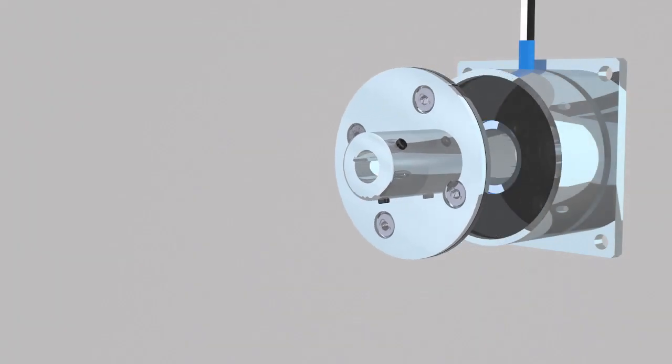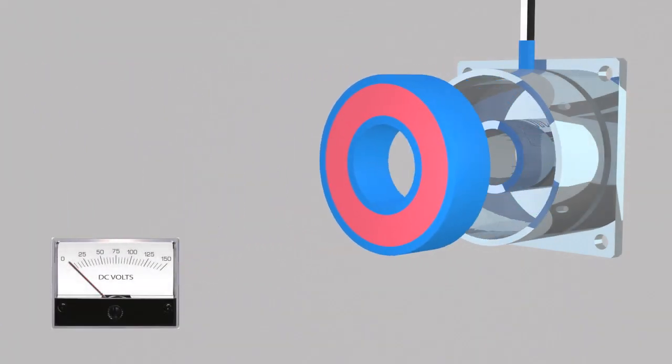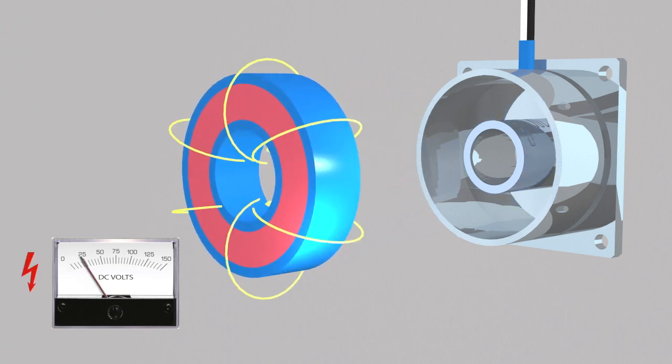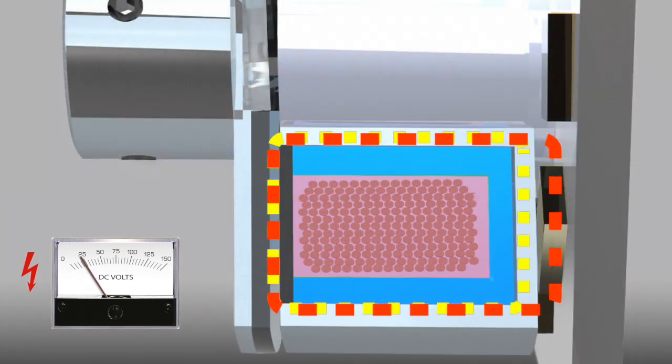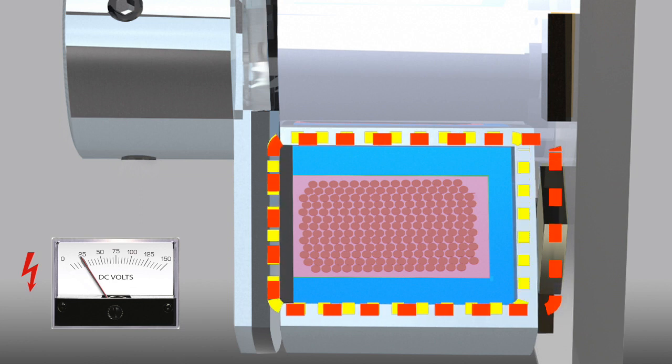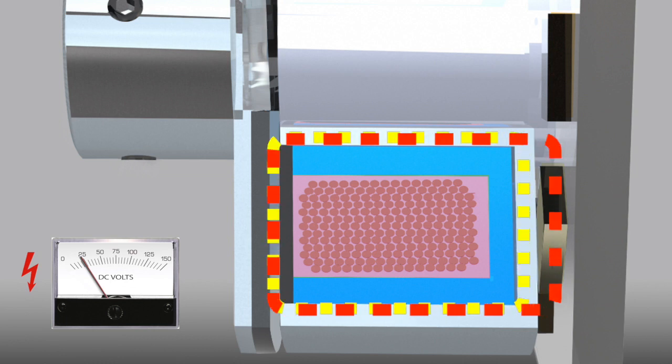When voltage or current is applied to the brake, the coil becomes an electromagnet. This produces magnetic lines of flux. The flux travels through the coil, counteracting the flux created by the permanent magnets, releasing the magnetically attracted armature disc and creating an air gap so rotation is possible.